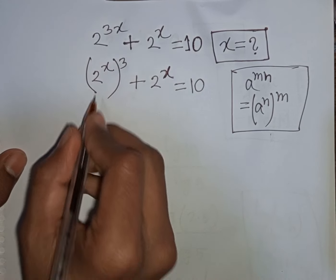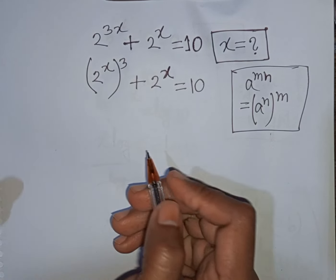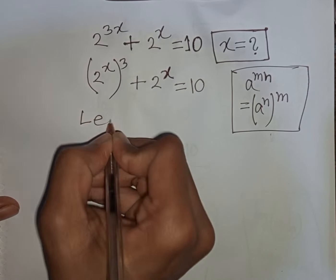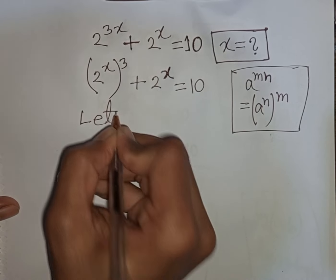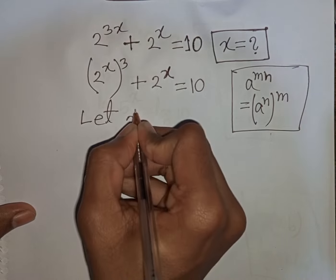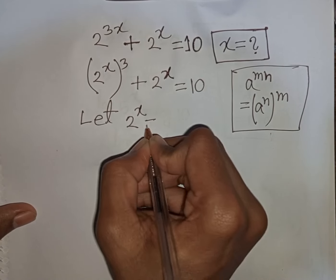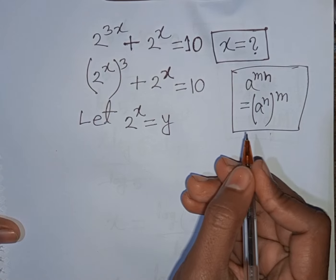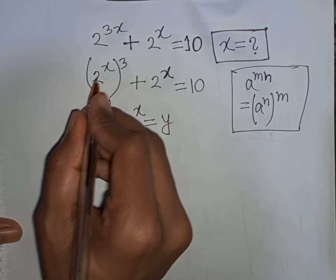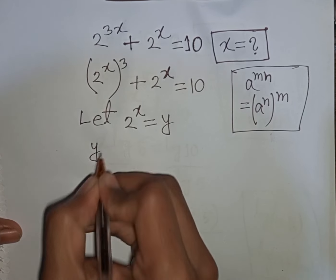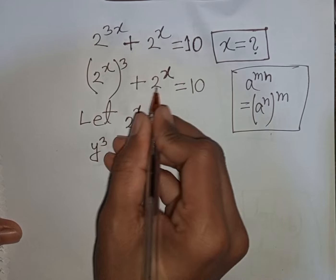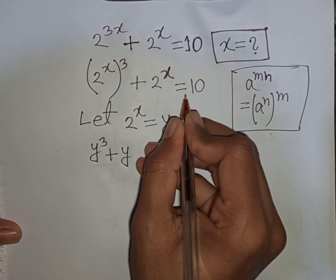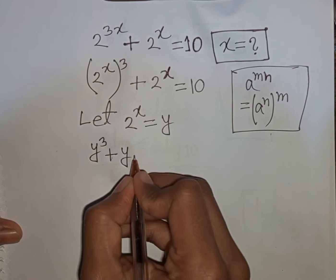Now we see that 2^x and 2^x are both the same term. So let 2 to the power x be substituted by y. Our equation will then be y cubed plus y is equal to 10.